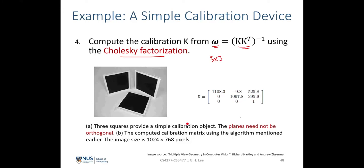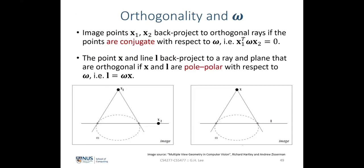After doing this computation, we can see the result obtained. Another interesting property of the image of the absolute conic is that since it is a conic, it obeys the pole-polar relation. Suppose we have two image points that back-project to orthogonal rays. These two image points, if they back-project to orthogonal rays, are related with respect to omega by a constraint that comes from the pole-polar relation.